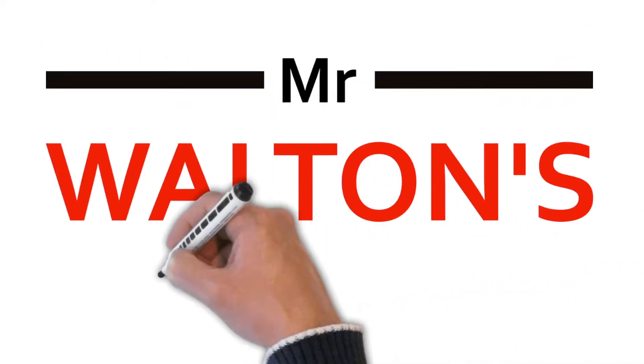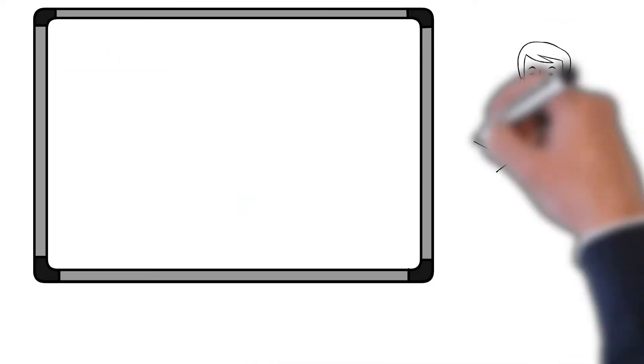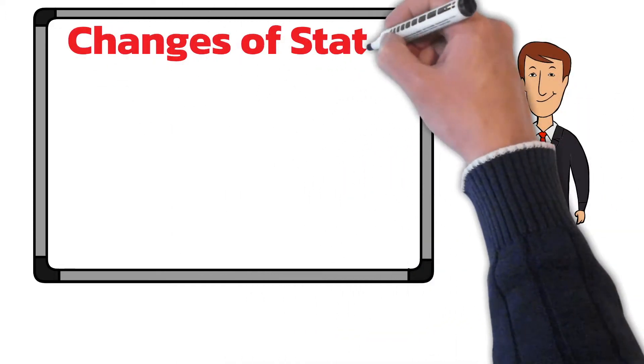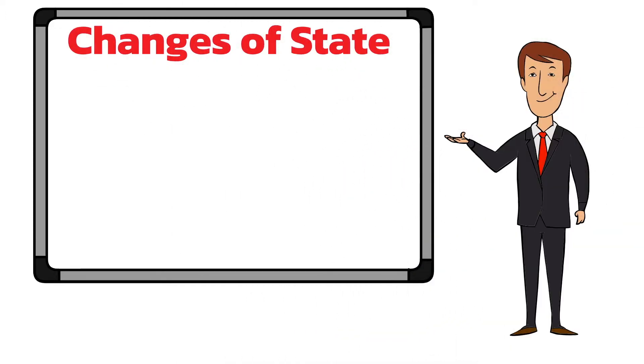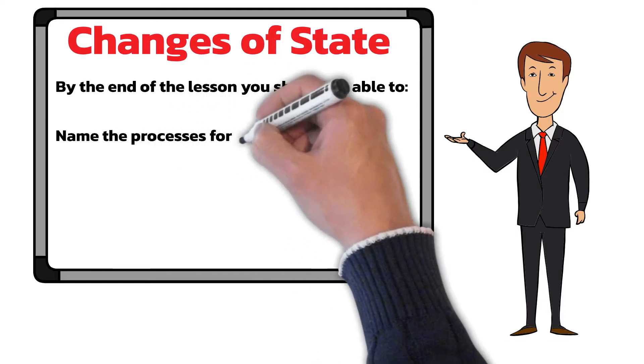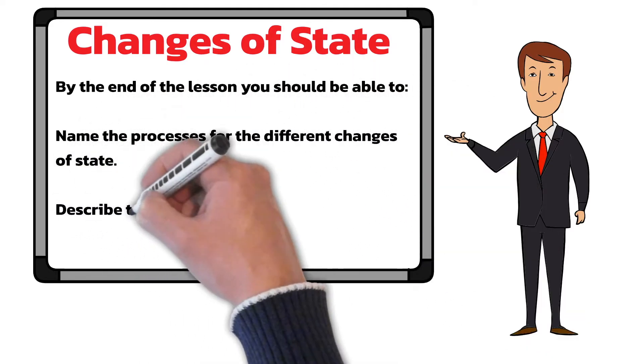Hello and welcome to Mr. Walton's physics lessons. In today's lesson we'll be looking at changes of state from the particle model of matter topic of GCSE combined science and GCSE physics. By the end of the lesson you should be able to name the processes for the different changes of state and describe them using the particle model.